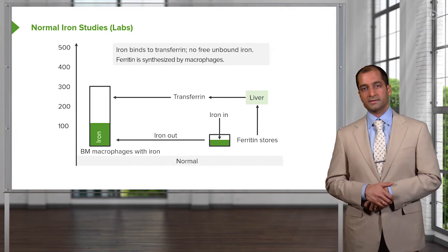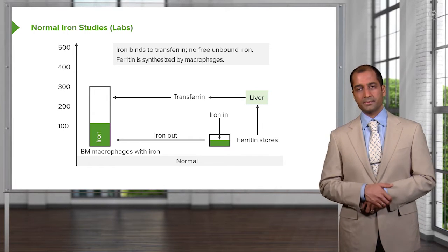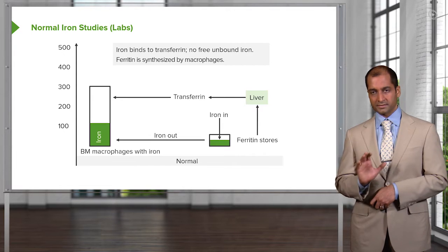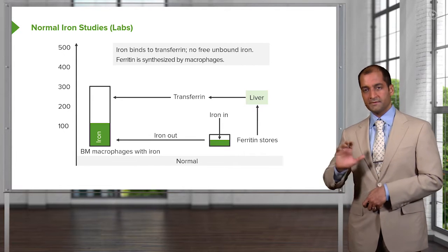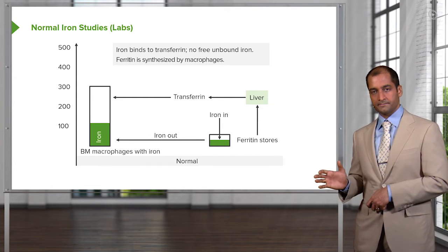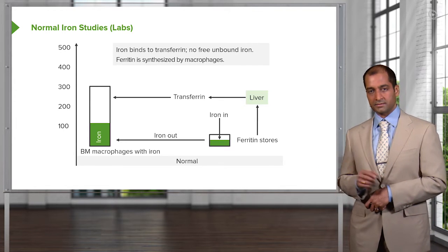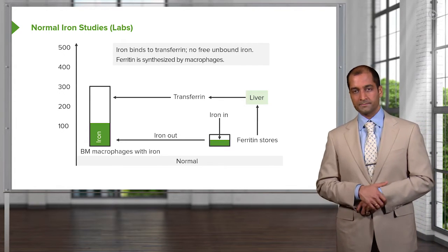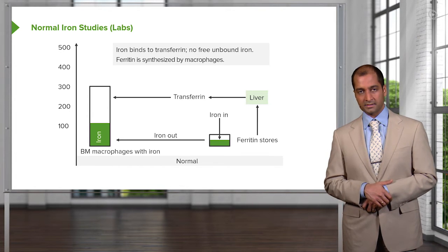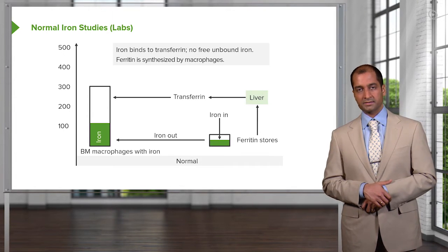Then, what about the thalassemias? They have nothing to do with the heme component, right? We'll talk more about this as well. But before we get into any of that, I need to make sure you have a proper understanding of this graph. It will tell you all the relevant iron study labs that you want to know for microcytic anemias.